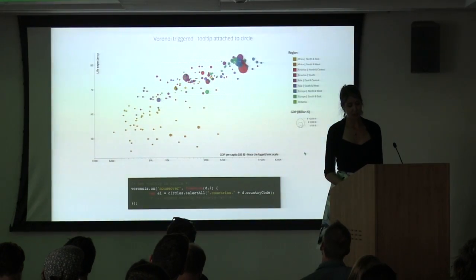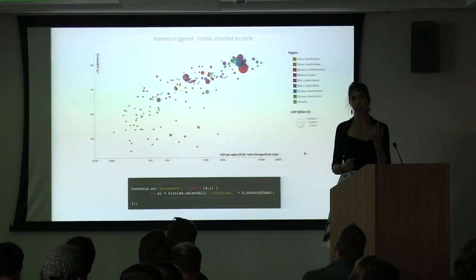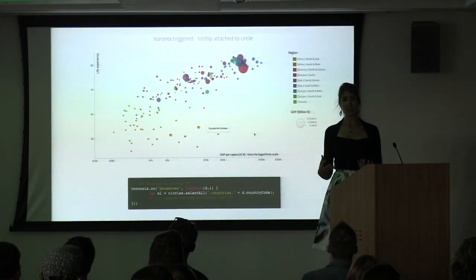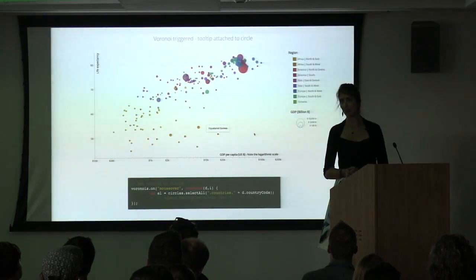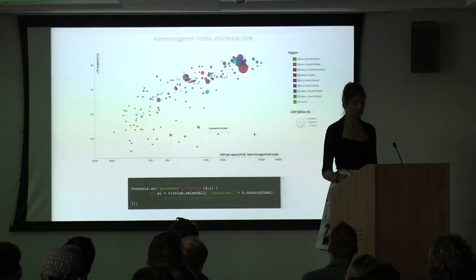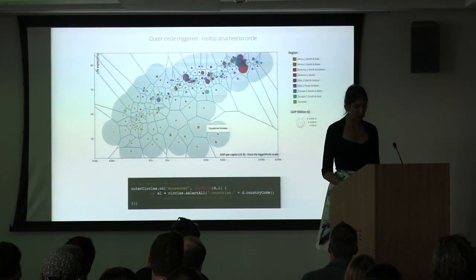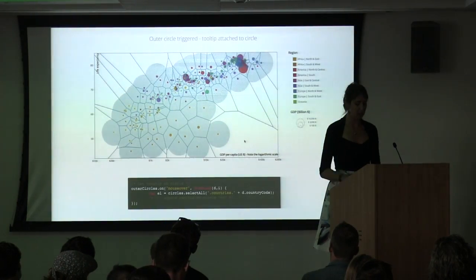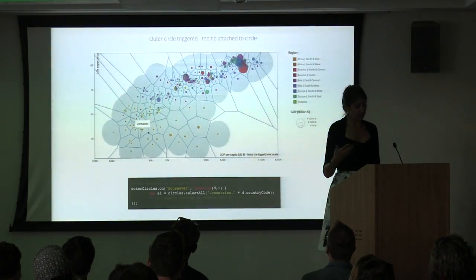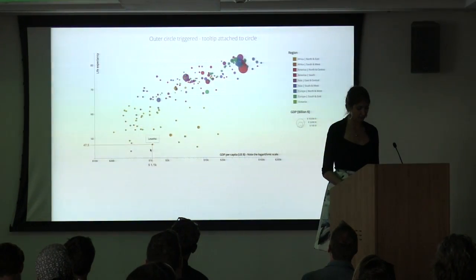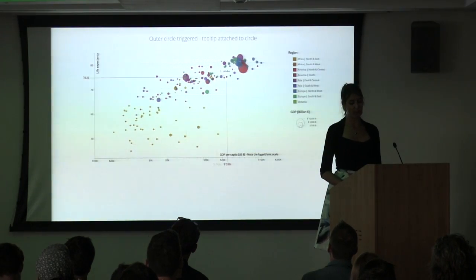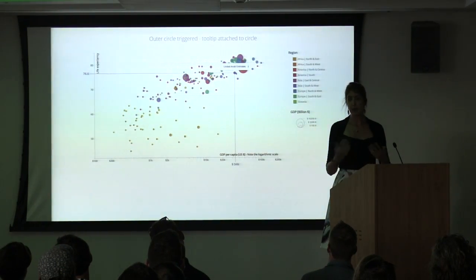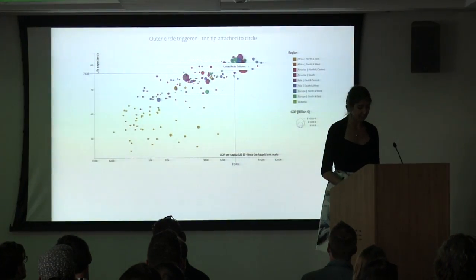I made a tutorial on how to recreate this effect, and a few months later somebody came with a very good improvement. They pointed out that if you're very far from any circle you don't really expect to see a tooltip, so they combined the Voronoi cells with distance-limiting circles. Now you only see a tooltip when hovering within those circles, which are cut according to the Voronoi boundaries - all happening under the hood. That's how something as simple as a scatter plot can still be improved beyond the default to make it more user-friendly for anyone wanting to investigate and find insights.